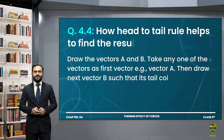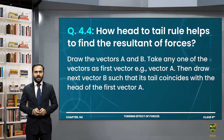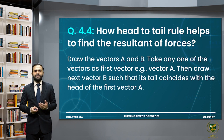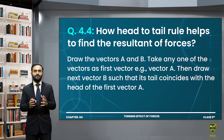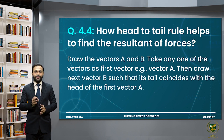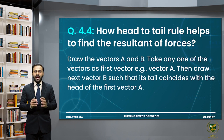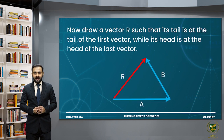Question 4.4: How does the head to tail rule help to find the resultant of forces? According to the head to tail rule, the addition of forces is not a simple algebraic addition, because force is a vector quantity having both magnitude and direction. To add them, we use a graphical method called the head to tail rule.